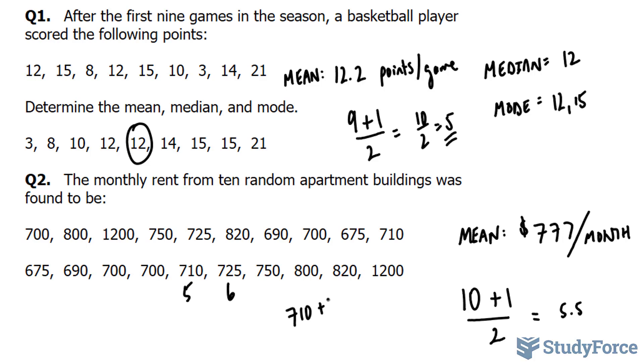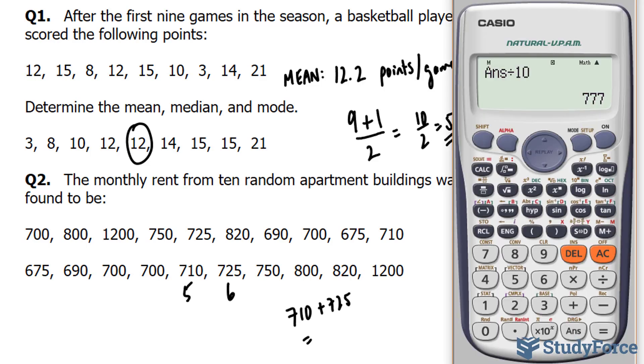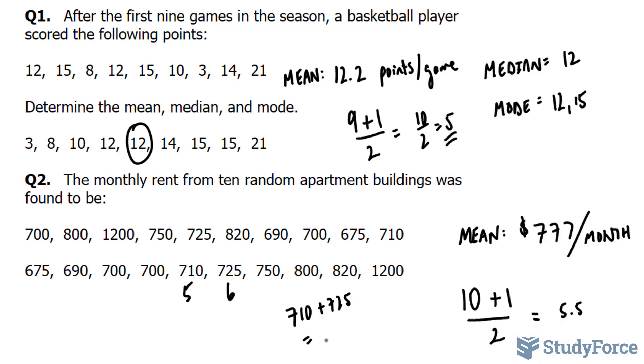710 plus 725. Using our calculator, we'll divide this by 2 afterwards. 710 plus 725 divided by 2. And that gives us 717.